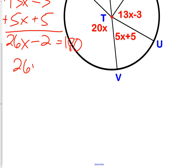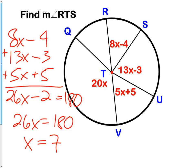Adding the two across, I get 26X equals 182. Dividing by 26, I get X equals 7. Now that I know what X is, I can go back and answer the question. What is the measurement of angle RTS? RTS, then, would be 8 times 7 minus 4, or 56 minus 4, which is 52 degrees. We got all of this because we knew we had a semicircle.